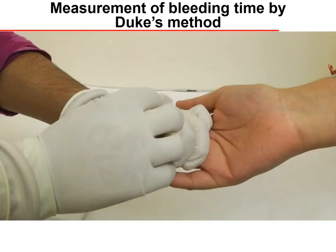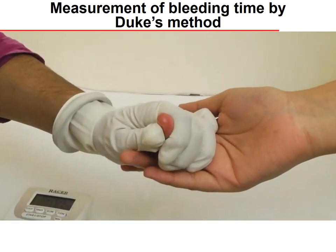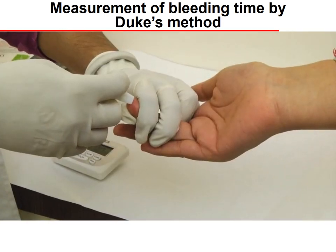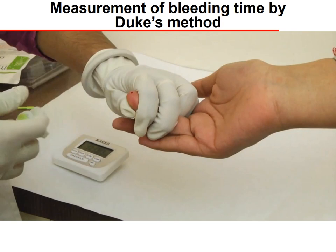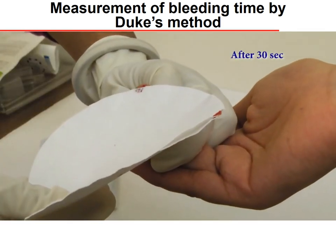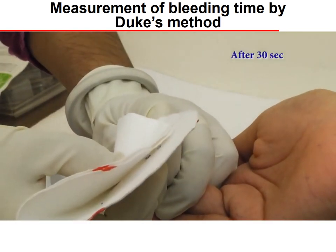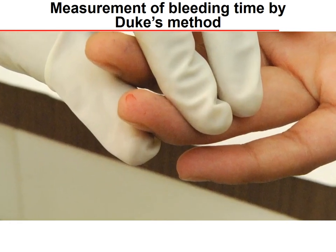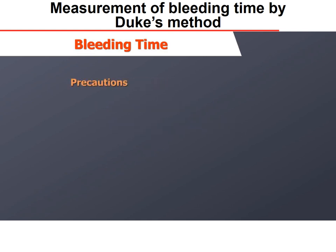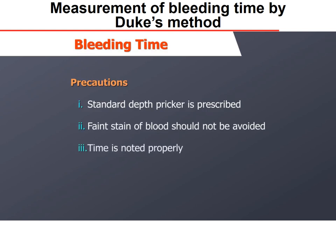For the Duke method procedure, the patient is pricked with a lancet, preferably on the earlobe or fingertip, after swabbing with alcohol. Let the alcohol dry, then prick the fingertip about 3–4 mm deep, and start the stopwatch simultaneously. Wipe the blood every 30 seconds with filter paper, taking care to wipe from the side and not directly on the puncture site. The test ceases when bleeding ceases. The Duke method is the easiest to perform but least standardized, with the least precision and accuracy. Standard depth prickers should be prescribed and time noted properly.